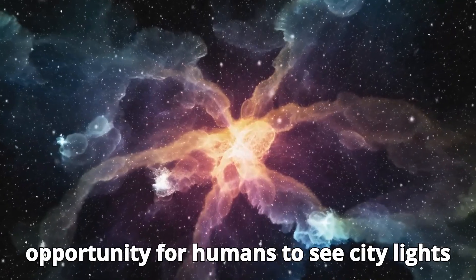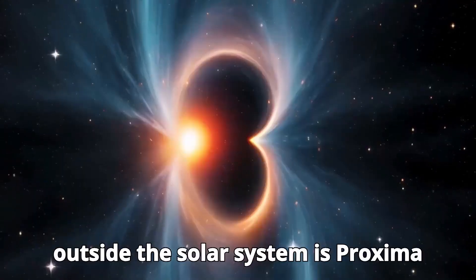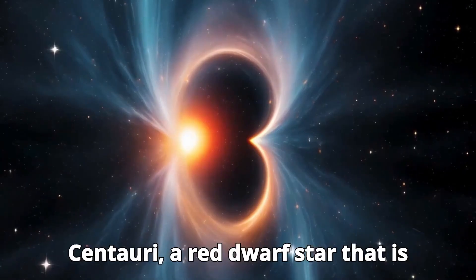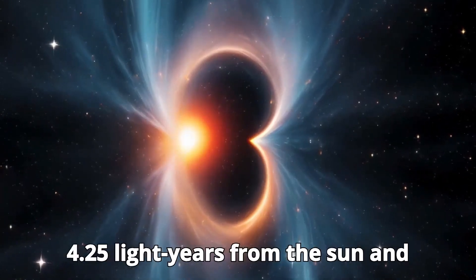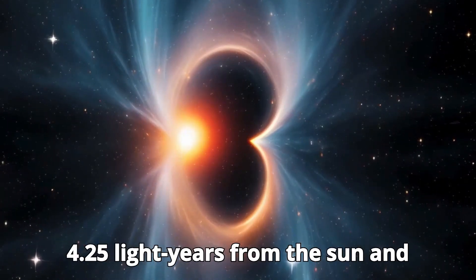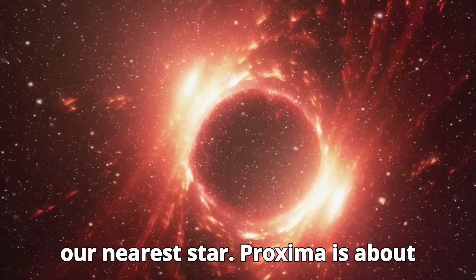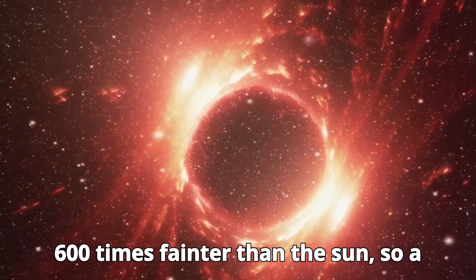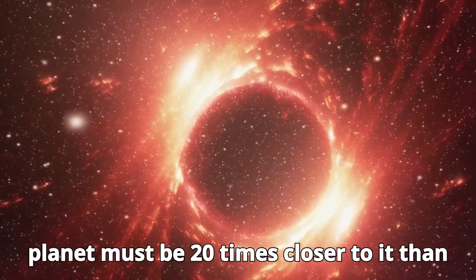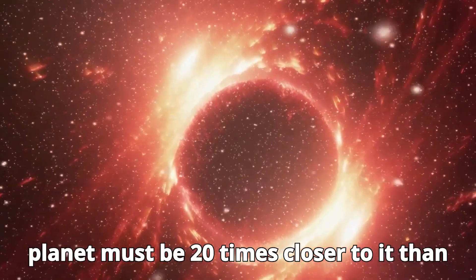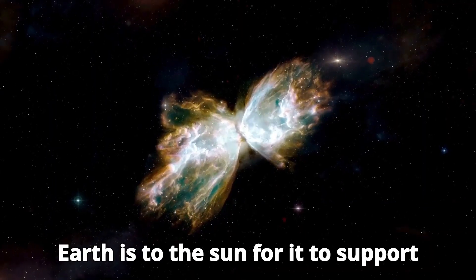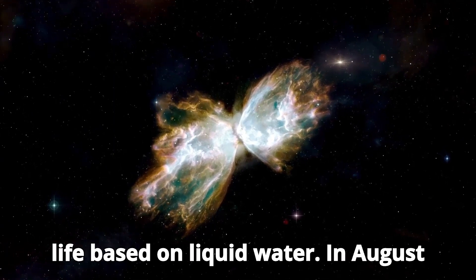Proxima Centauri is a red dwarf star that is 4.25 light-years from the Sun and our nearest star. Proxima is about 600 times fainter than the Sun, so a planet must be 20 times closer to it than Earth is to the Sun for it to support life based on liquid water.